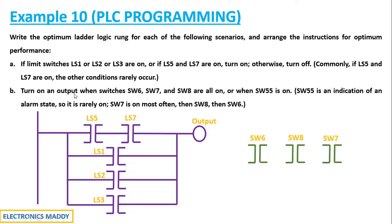Output is high when all of these switches are on together. That means it should be an AND gate and we have an OR gate because they have mentioned OR when S5 is on. S5 is an indication of an alarm state, so it is rarely on. Whichever rarely occurs, let us place them in the bottom. You don't have to go through each of the rung conditions. Once if the first rung is high and if it can determine the output then you don't have to check for the second one.